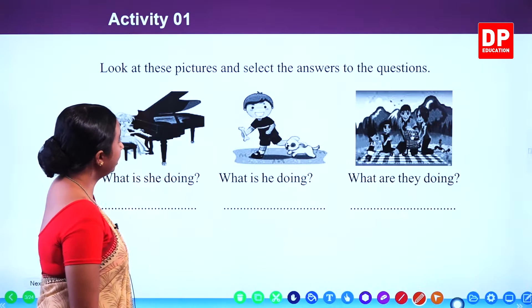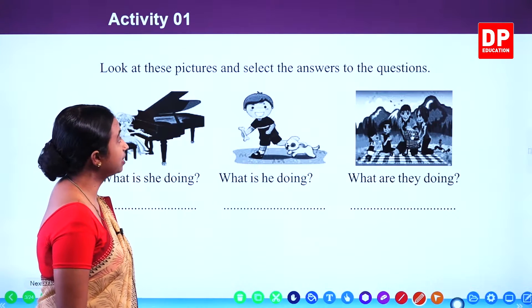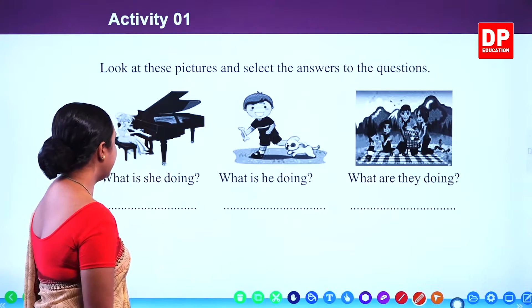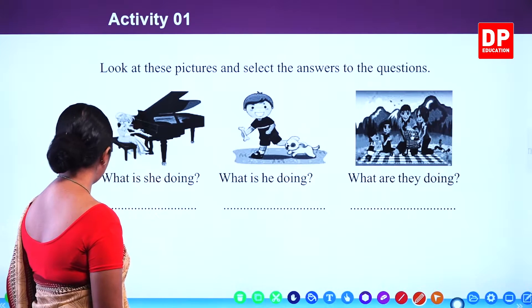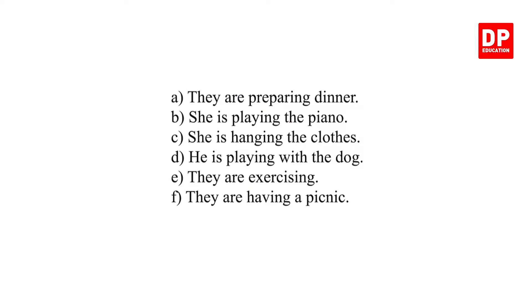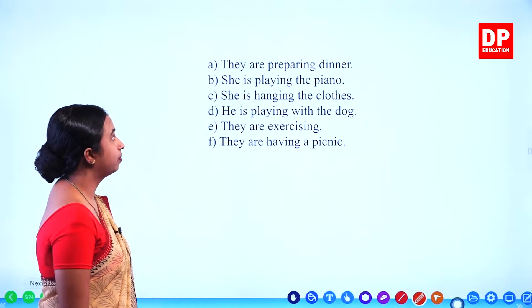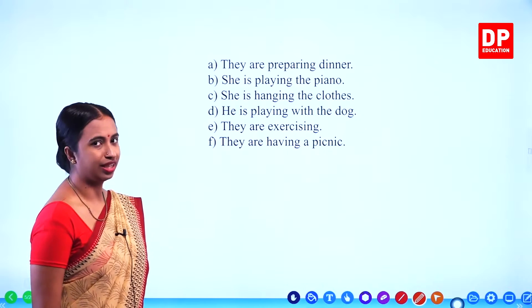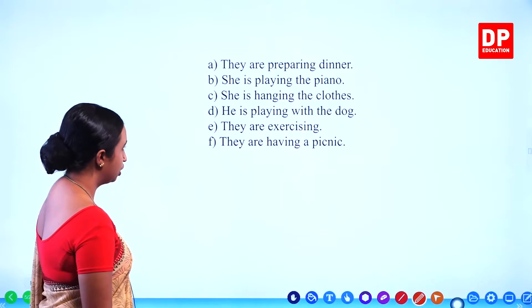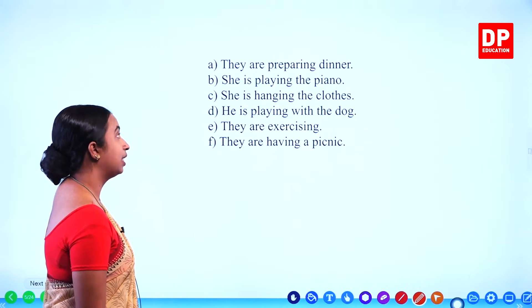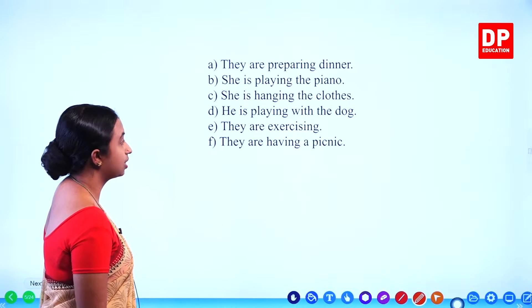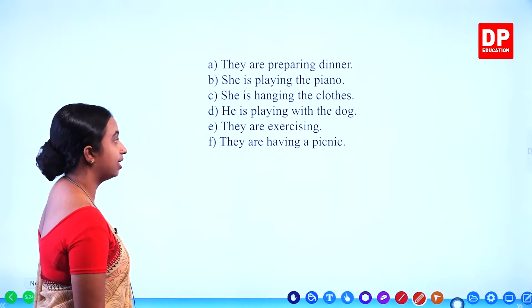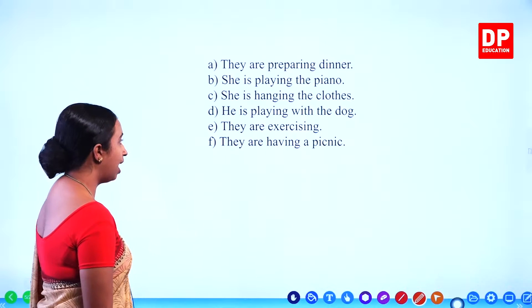Activity 1. Look at these pictures and select the answers to the questions. Now we are going to select answers. They are preparing dinner — here is the ING form. She is playing the piano. She is hanging the clothes. He is playing with the dog. They are exercising. They are having a picnic.